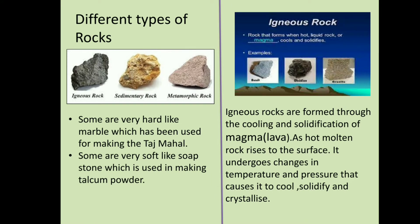What are the different types of rocks? Some are very hard like marble, which has been used for making the Taj Mahal. Some are very soft like soapstone, which is used in making talcum powder. Different types of rocks include igneous rocks, sedimentary rocks and metamorphic rocks.